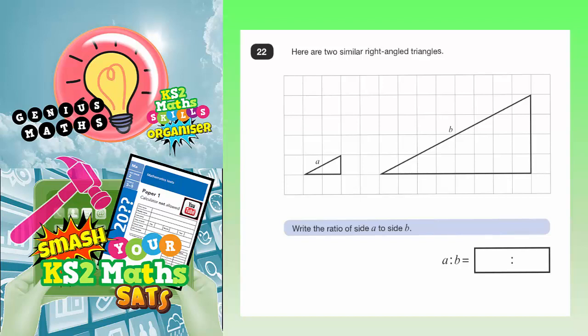Question 22. Here are two similar right-angled triangles. Write the ratio of side A to side B.